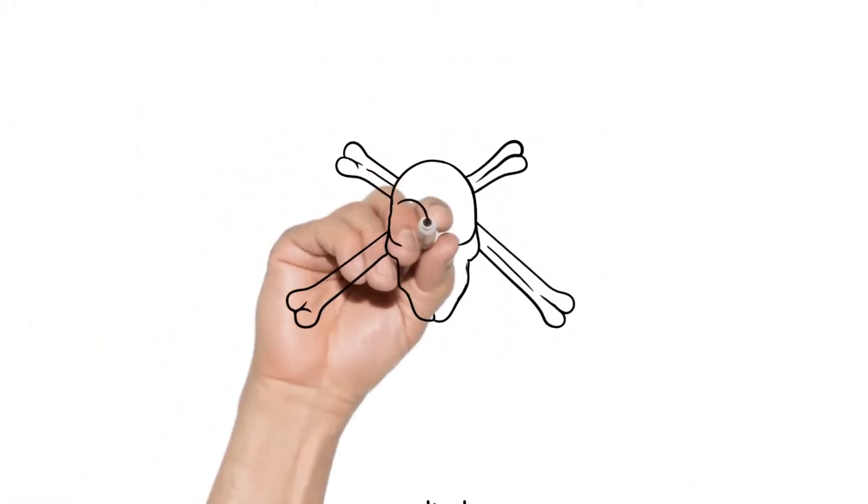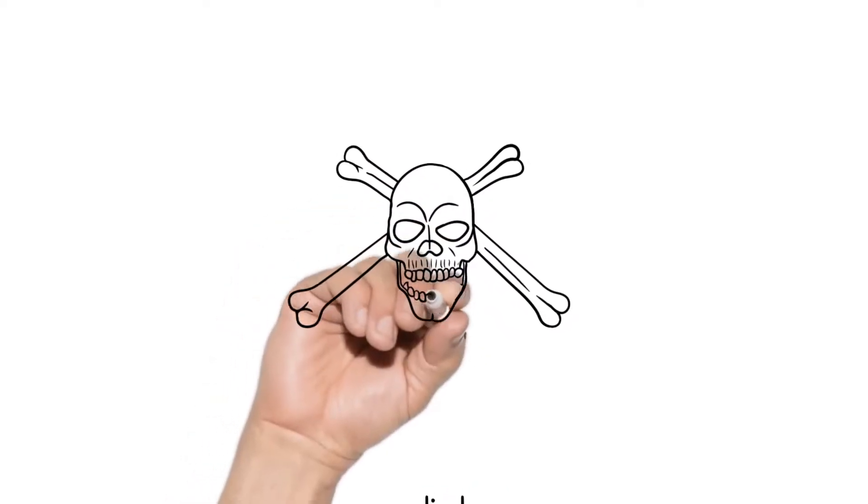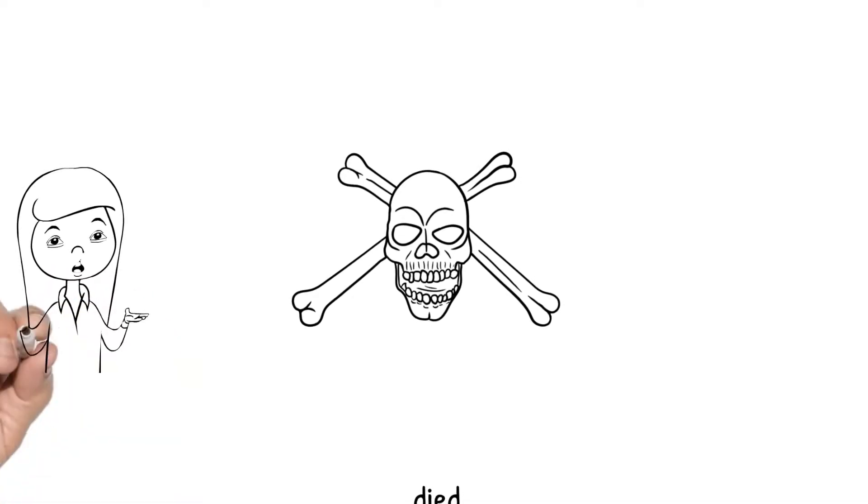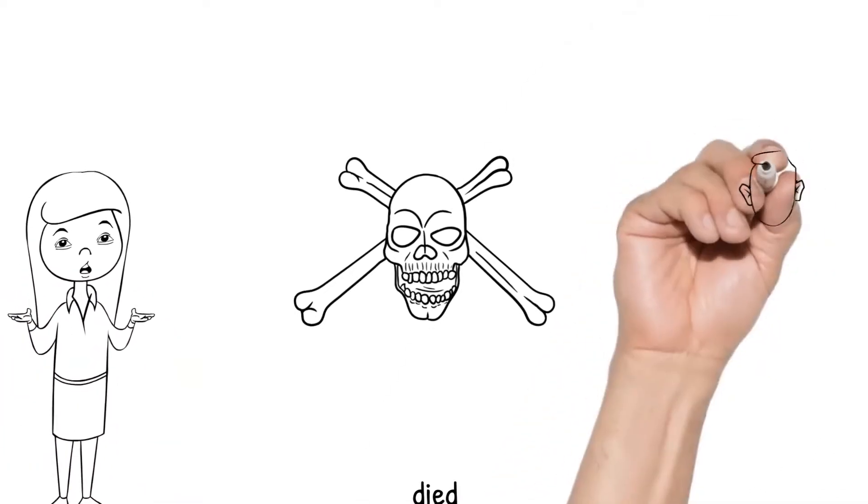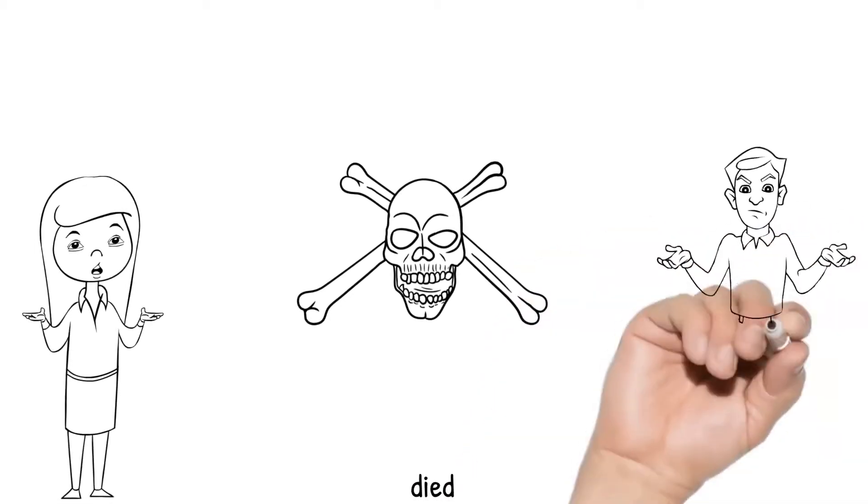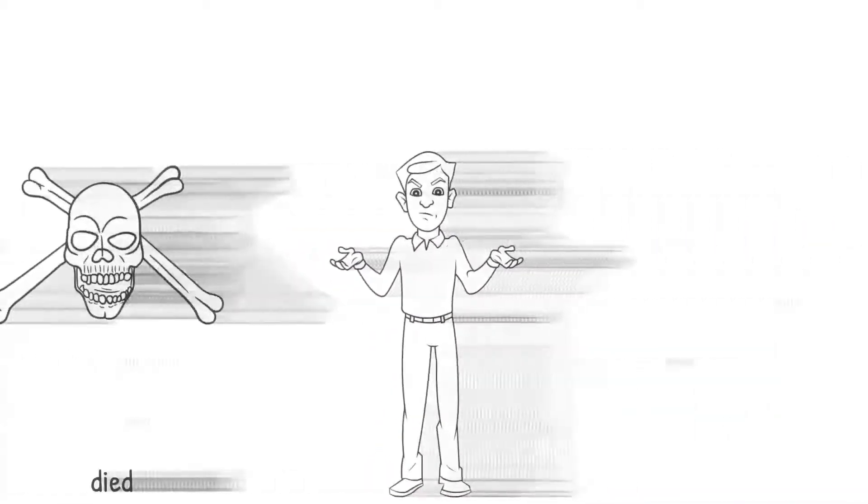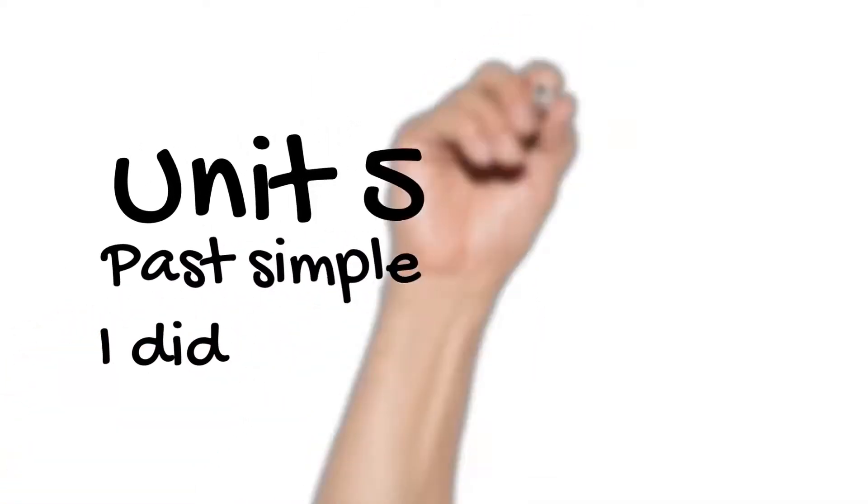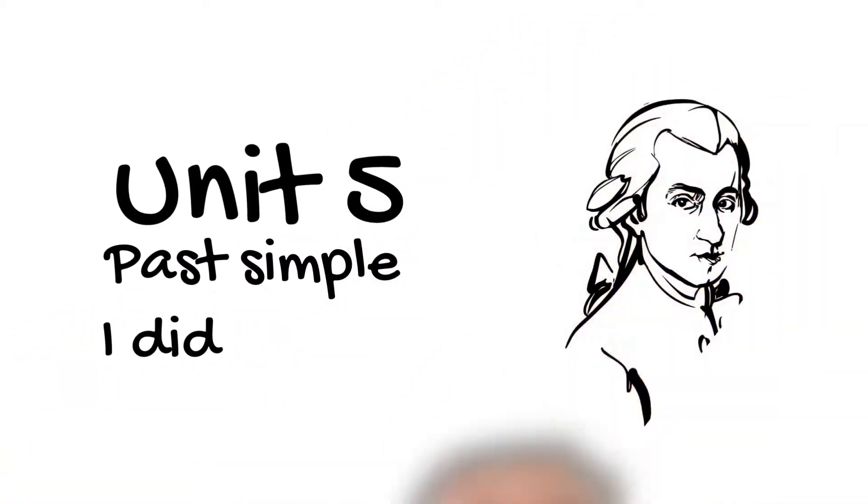Mozart died at the age of 35. His death was recorded as severe miliary fever. Many people find it suspicious, leading to countless theories on what could have really happened to him. That was Unit 5, Past Simple. I did. I hope you learned something new today.